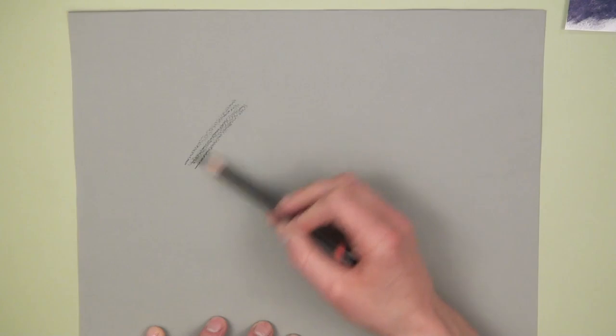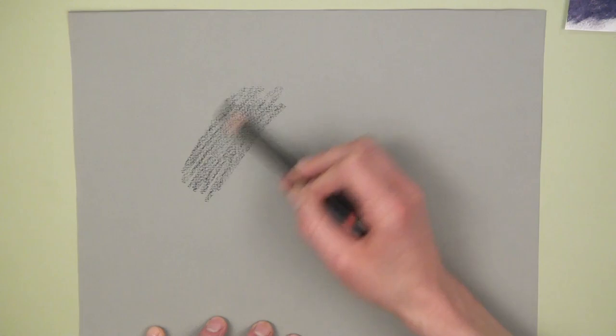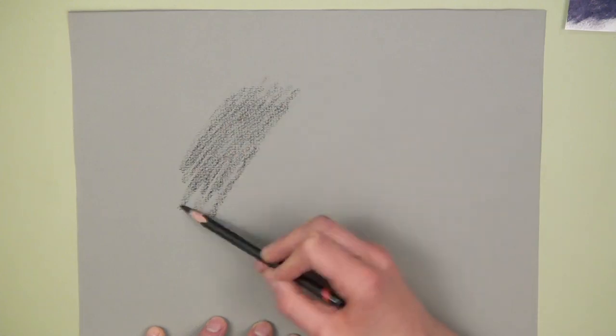So the first thing I'm going to do with a charcoal pencil is lay some value down onto the paper, and this is going to act as the background. So the background and the surrounding area that would be behind the water droplet.